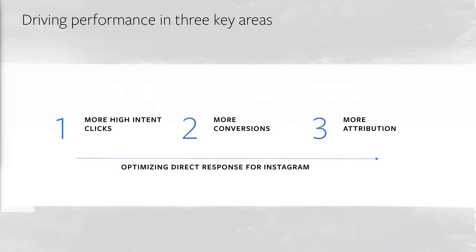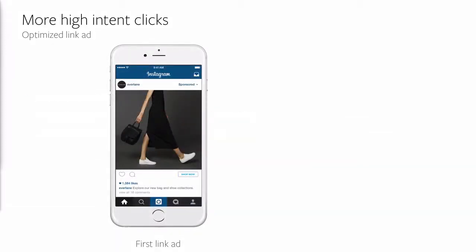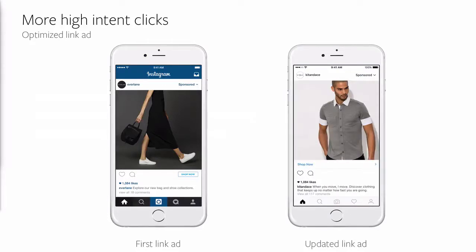We recently introduced a number of product enhancements. First, we updated the call to action on Instagram link ads. We conducted an eye-tracking study and discovered that most people scan the left-hand side of an ad. Our original link ad had the CTA button on the lower right-hand side. In June, we optimized the format and now display the call to action button across the bottom of the entire image, placing it on the left-hand side where users' eyes naturally go.